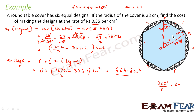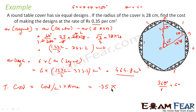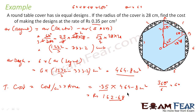Area of design = 6 × area of one segment = 464.8 centimeter square. Total cost = cost per centimeter square × total area = 0.35 rupees/cm² × 464.8 cm² = rupees 162.68. So the total cost of making the design is 162.68 rupees.